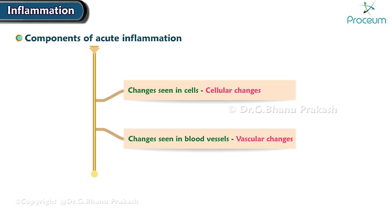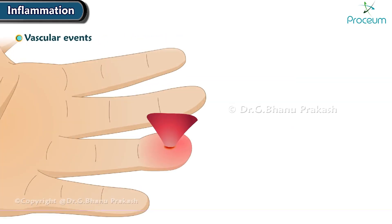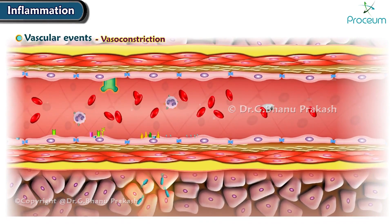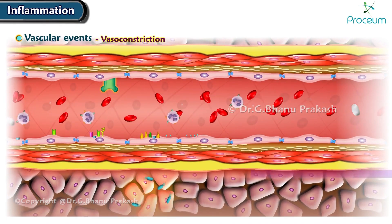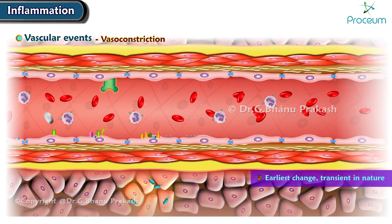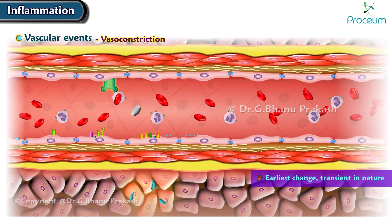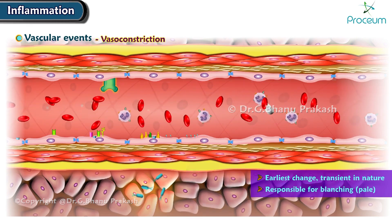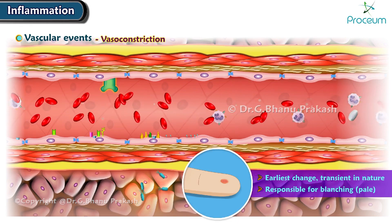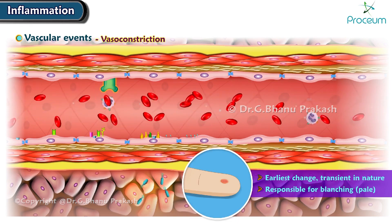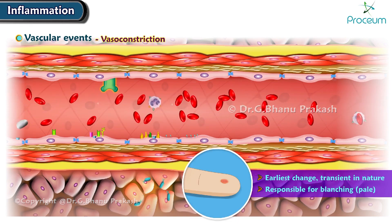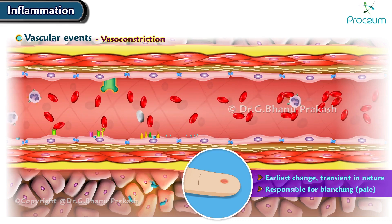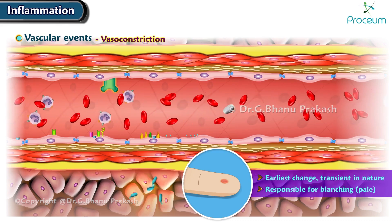Let's start by talking about vascular events. First, there's vasoconstriction. This event is the earliest change, which is transient in nature. This is what's responsible for blanching, or skin turning pale. As the immediate response to injury or insult, the blood vessels rapidly and transiently constrict and then dilate.